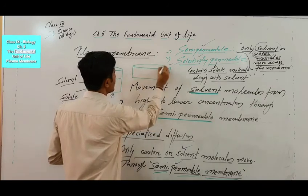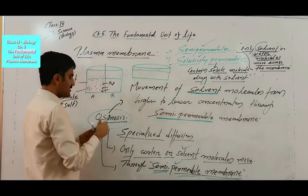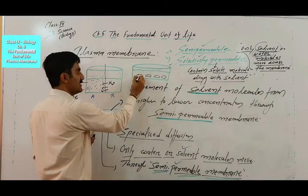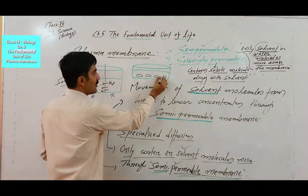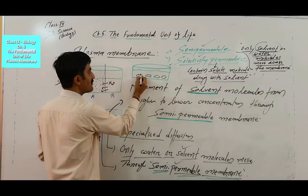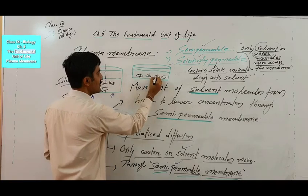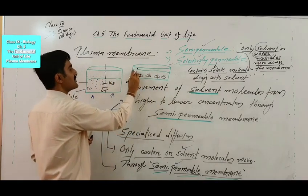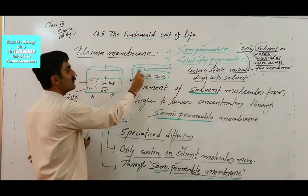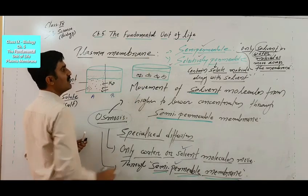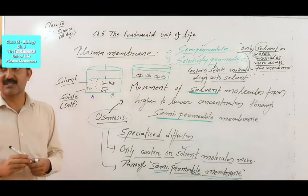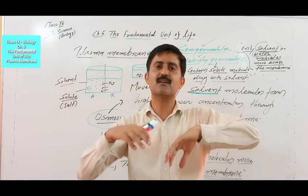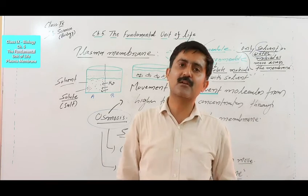As water moves inside the dry raisins, they will swell up. If you test the water in the dish afterwards, it will taste normal, because the solute — sugar inside the raisin — does not come out; only water can move inside. This overall process is osmosis. Related to osmosis are the terms endosmosis — when solvent moves from the surrounding into the cell — and exosmosis — when the solvent moves out of the cell. These related phenomena will be covered in the next video.